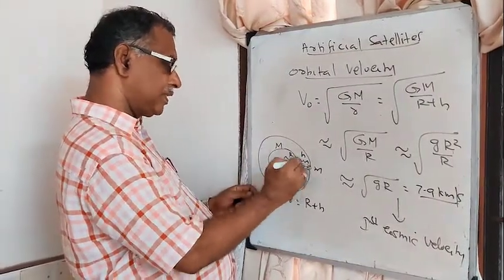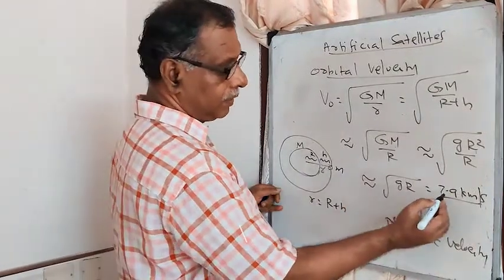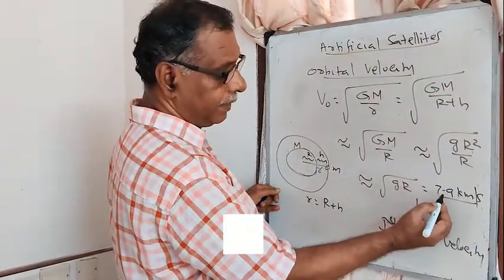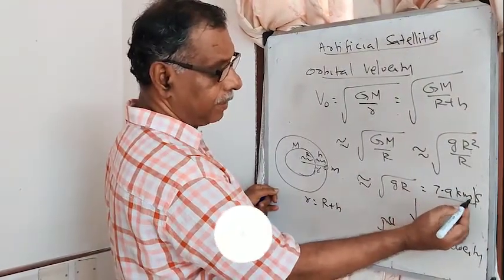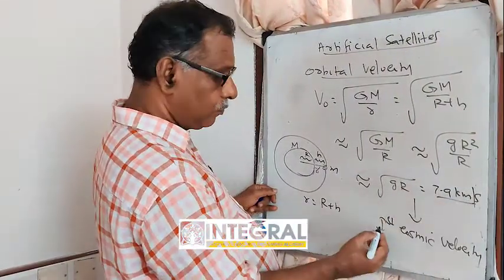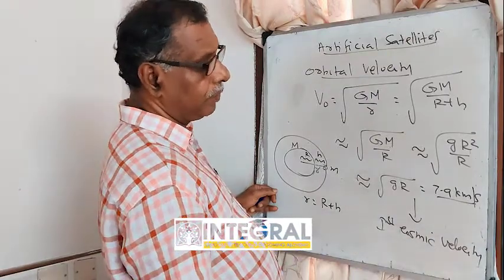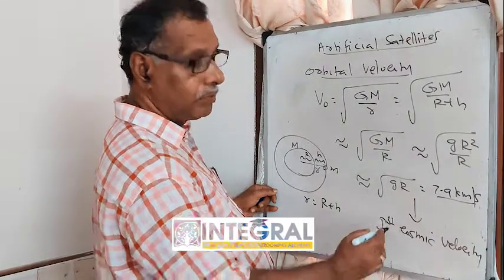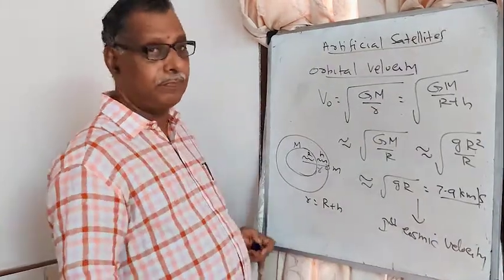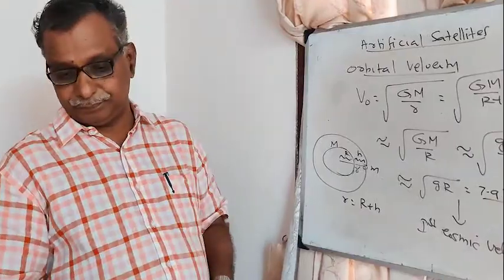For a satellite revolving very close to the surface of the earth, the orbital velocity is approximately 7.9 km/s. This velocity is called the First Cosmic Velocity.